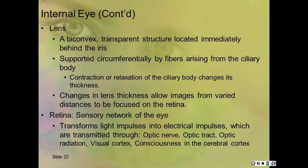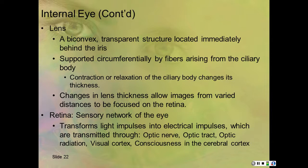The internal eye has the lens, a transparent structure located immediately behind the iris, supported circumferentially by fibers arising from the ciliary body. Contraction and relaxation of the ciliary body changes its thickness, allowing images from varied distances to be focused on the retina.